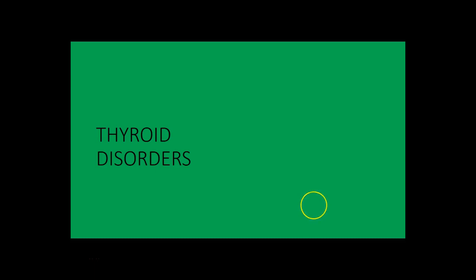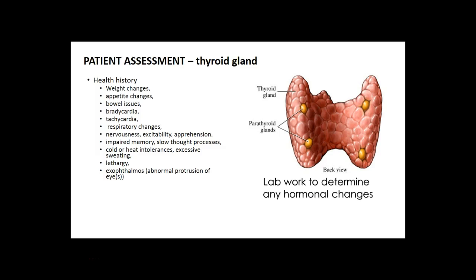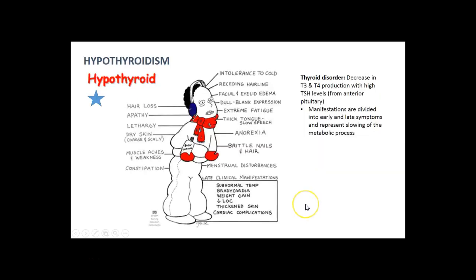Let's get into thyroid disorders — these are more common. Again, thyroid symptoms can coincide with other conditions, so lab work will be needed. Signs and symptoms of hypothyroidism: remember we're talking about metabolism slowing down. You're going to have hair loss, lethargy, dry skin, body aches, constipation, anorexia, fatigue, slow speech, intolerance to cold. In late clinical stages: subnormal temperature, bradycardia, weight gain, and decreased level of consciousness.